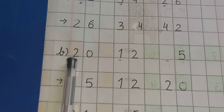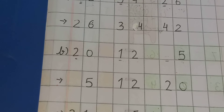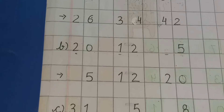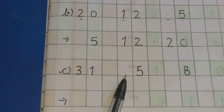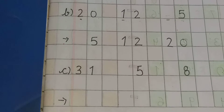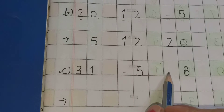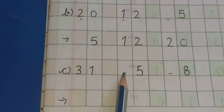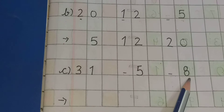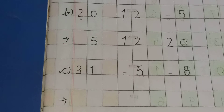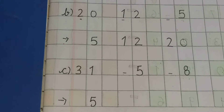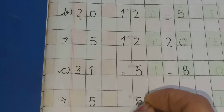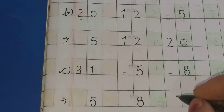बस आपको क्या करना है kids — आप tens के place पे जो given number है उनको compare करेंगे. जो number counting में पहले आता है वो smallest होता है, then उनको आप ascending order में arrange करते चले जाएंगे. Now come to the next numbers. Read with me loudly: 3, 1 — 31. Again only number 5 and only number 8. After those single digits, आएगा 3, 1 — 31.